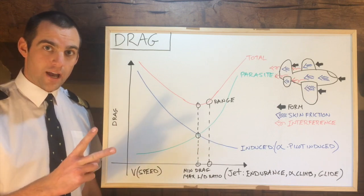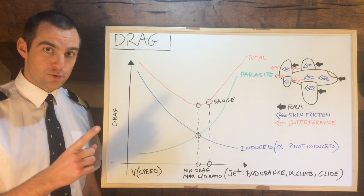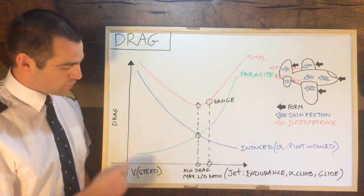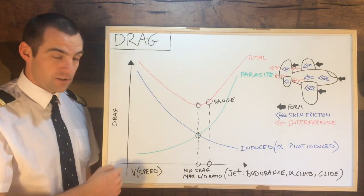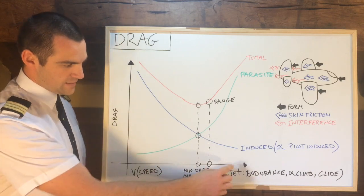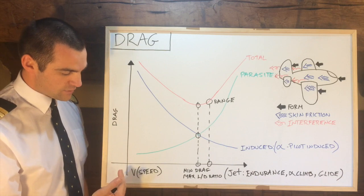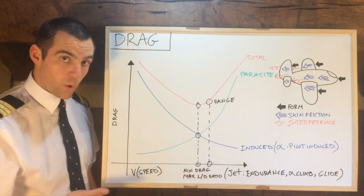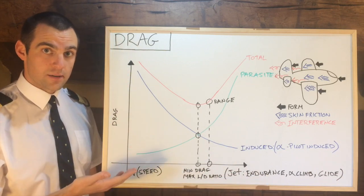Now there are two types of drag, parasite and induced. If we check out the little chart here, we can see drag on this axis over here and V, also called speed, on this bottom axis here. So this essentially is relating to the faster we're going, what happens to the drag and to the various types of drag.